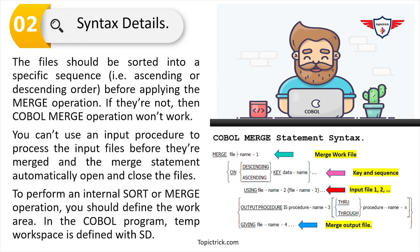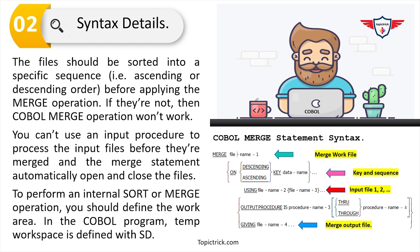I have created a separate video on how to use input and output procedures in COBOL sort and COBOL merge. Some important points before the example: all input files should be sorted in a specific sequence — ascending or descending — because if you provide an unsorted file, the merge statement will not work. Input files can have fixed or variable length records as long as the key values are in the same location in each record. You do not need additional logic for opening, closing, reading, or writing files.